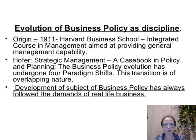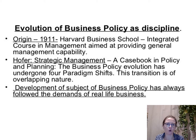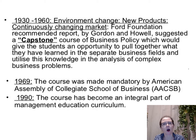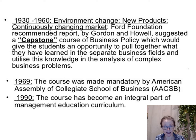Continuing this evolution of business policy as a discipline: Harvard Business School back in around 1911 talked about having an integrated course in management aimed at providing general management capability. The business policy evolution has undergone four paradigm shifts of overlapping nature. The development of the subject has always followed the demands of real life business. From 1930 through to 1960, in response to environmental change, new products and continuously changing markets, the Ford Foundation report recommended a capstone course in business policy, which would give students an opportunity to pull together what they had learned in separate business fields and utilise this knowledge in the analysis of complex business problems.